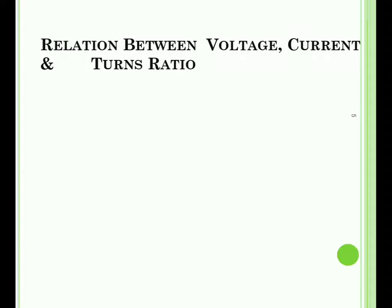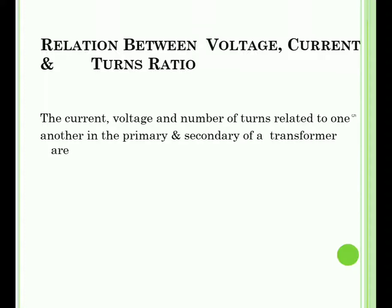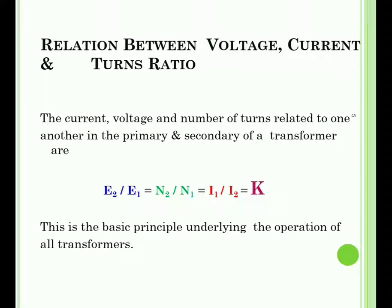The complete relation between voltage, current, and turns ratio for the primary and secondary of a transformer is: E2/E1 = N2/N1 = I1/I2 = K, where K is the transformation ratio. This is the basic principle underlying the operation of all transformers.